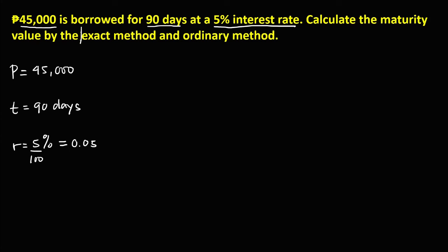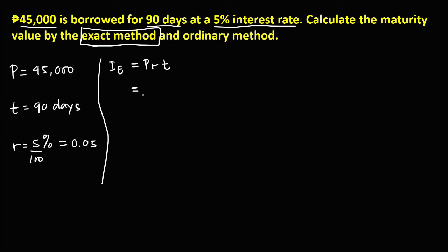To find the maturity value by the exact method, we first need to compute the exact interest using this formula: principal times rate times time. For the exact interest, the number of days in a year is 365. So for the time, 90 days is divided by 365 to convert it into years.